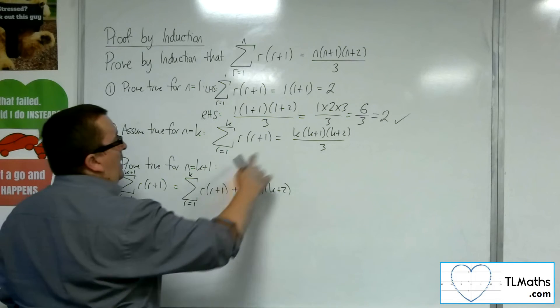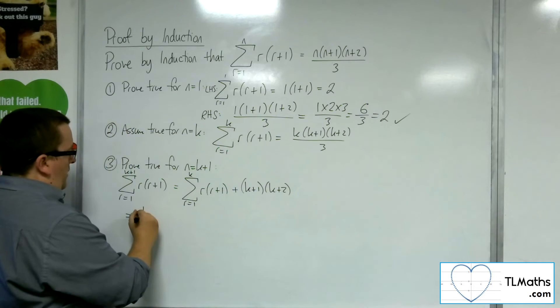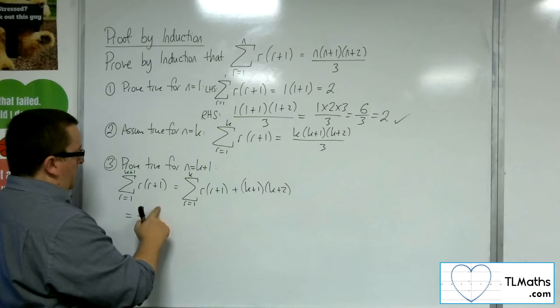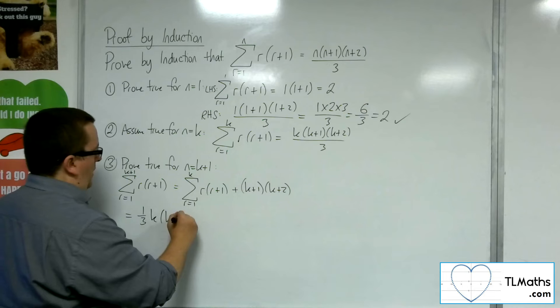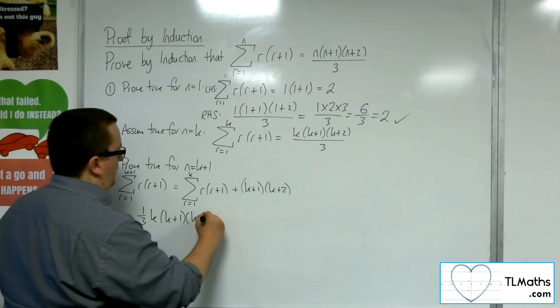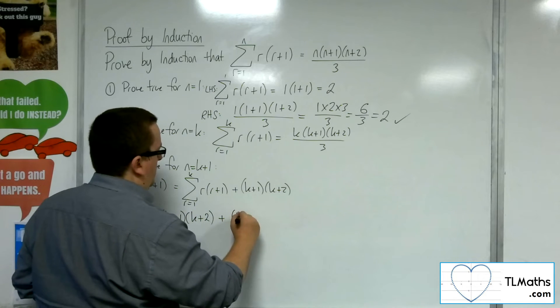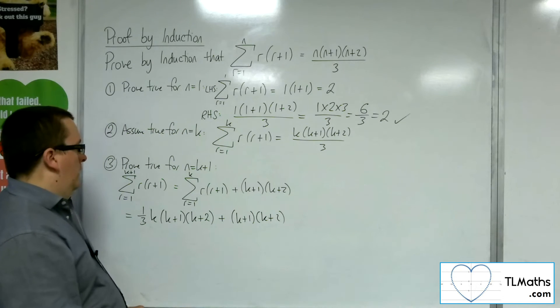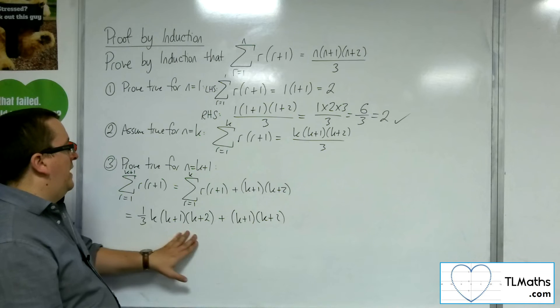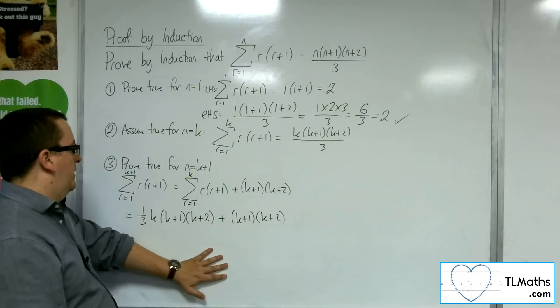Right, we've said that that is this. So we've got this 1 third. I'll put the 1 third at the front. k times k plus 1 times k plus 2, plus the k plus 1 times k plus 2 that we've got there. So we can see that we've got factors of k plus 1, k plus 2.